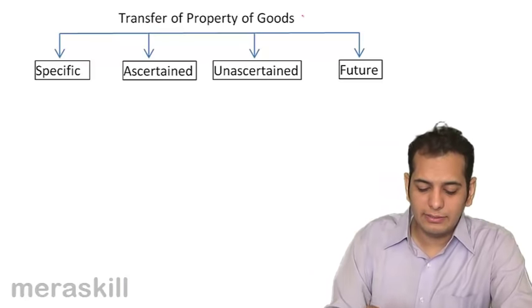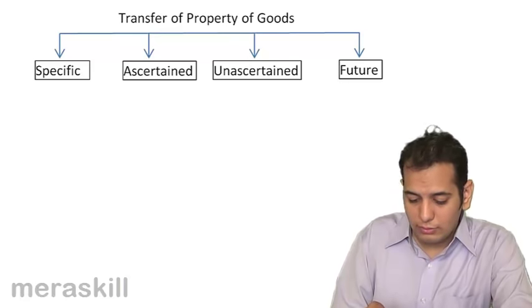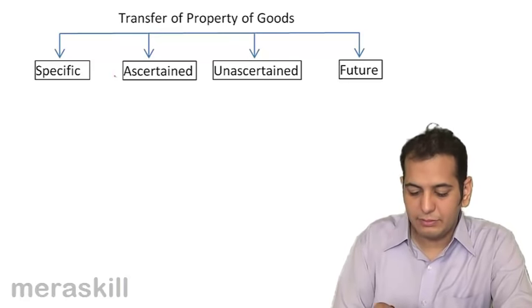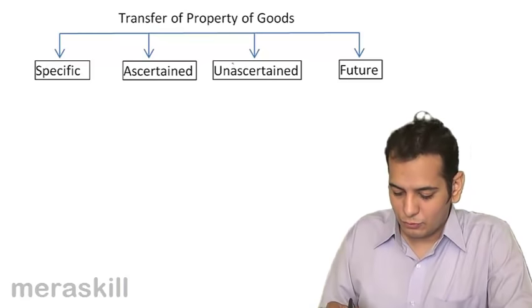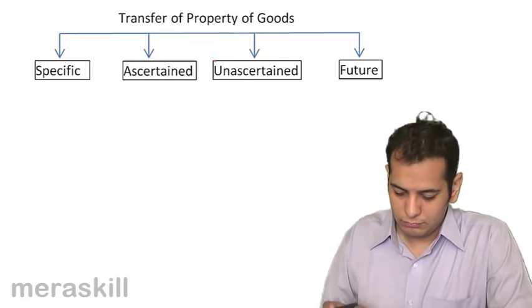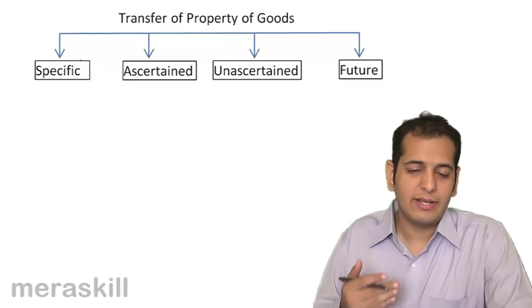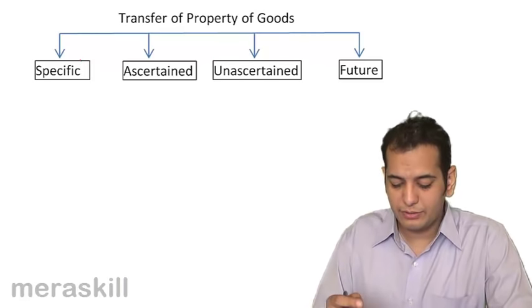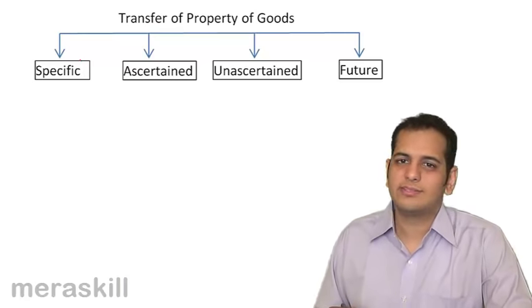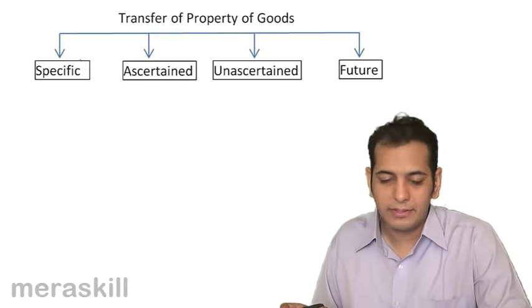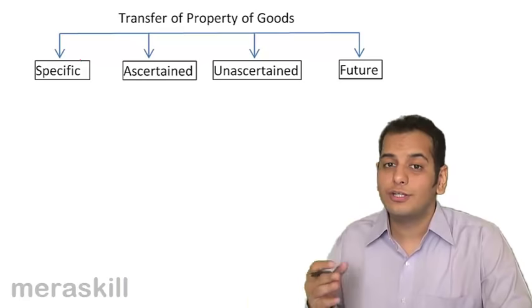Under existing goods, we have specific, ascertained, and unascertained goods — all three belong to the existing category. Then you have a separate category of future goods and a separate category of contingent goods.